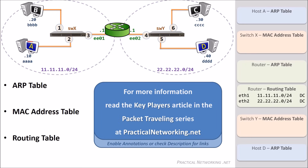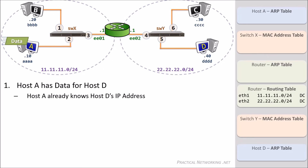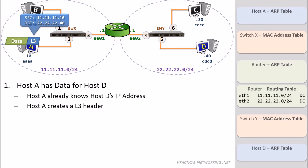Let's take a look at what it'll take to get data from Host A to Host D. Host A has some data and needs to get to Host D. Host A already knows the IP address of Host D, so it is able to put together a Layer 3 header with a source IP of 11.11.11.10 and a destination IP of 22.22.22.40. Host A can then compare the destination IP address with its own network to determine that Host D is on a foreign network, which means the packet needs to go to the default gateway — which in this case is the router.